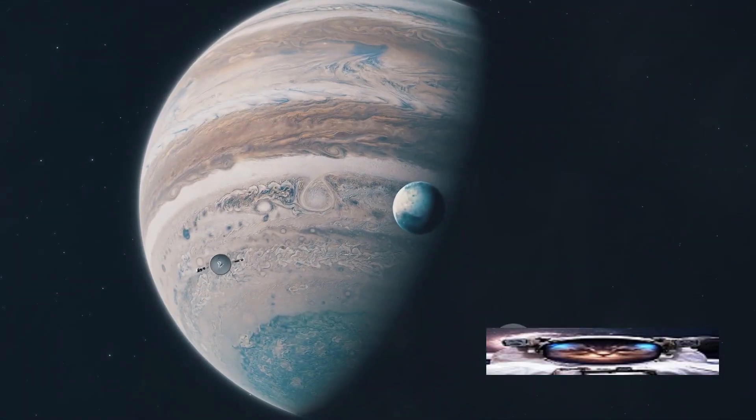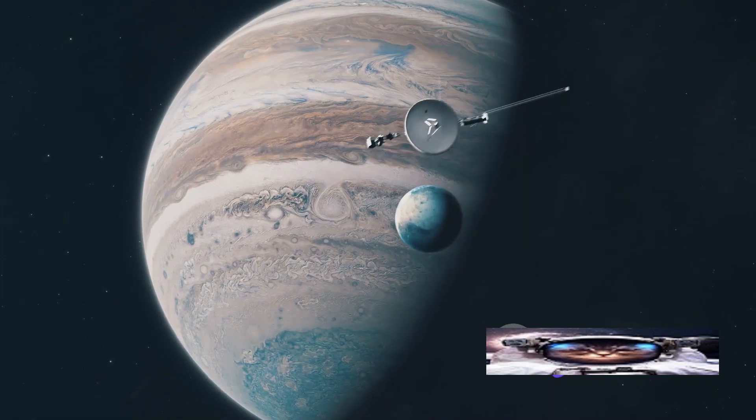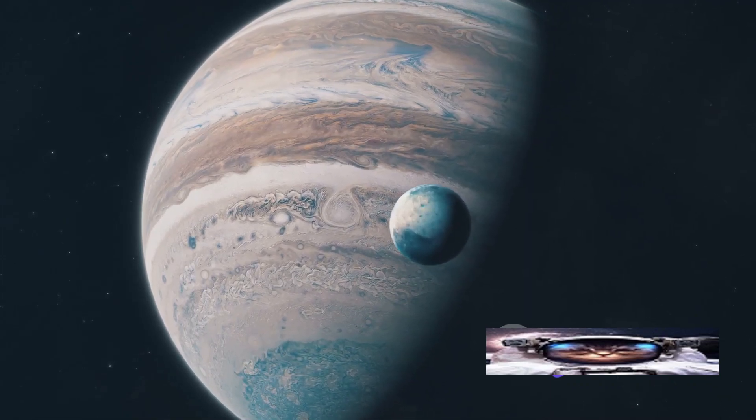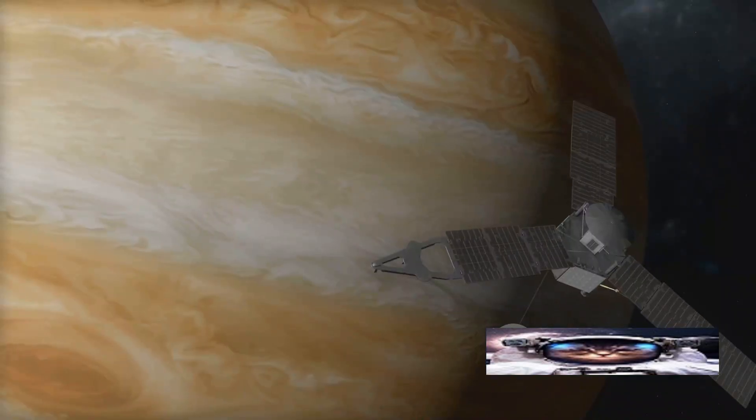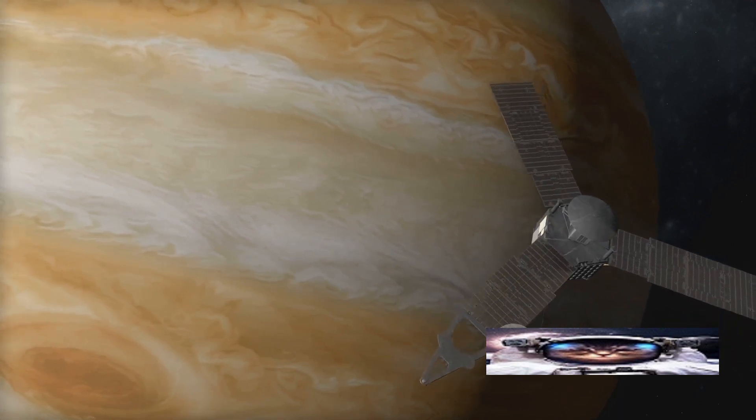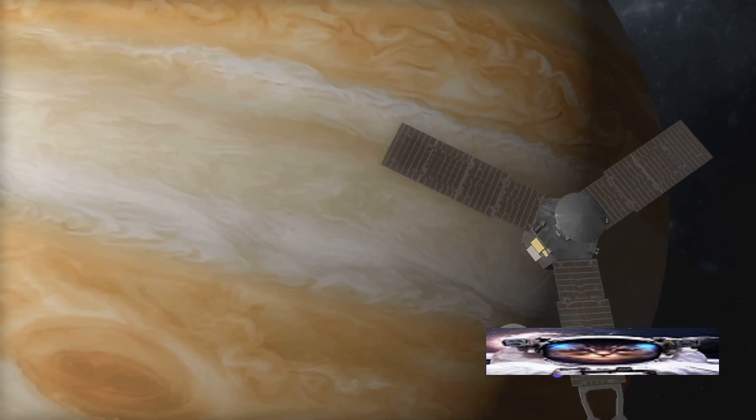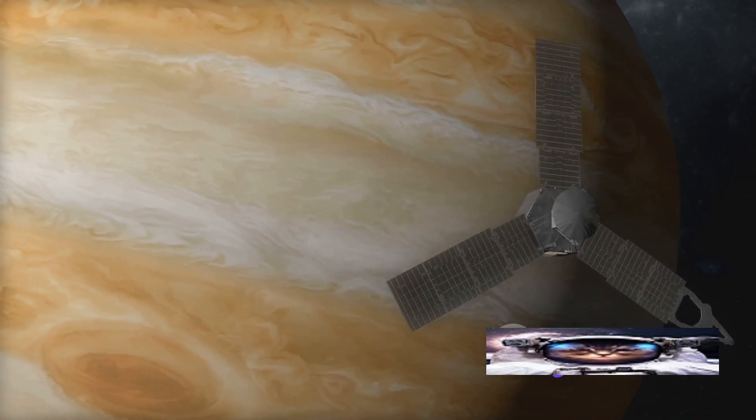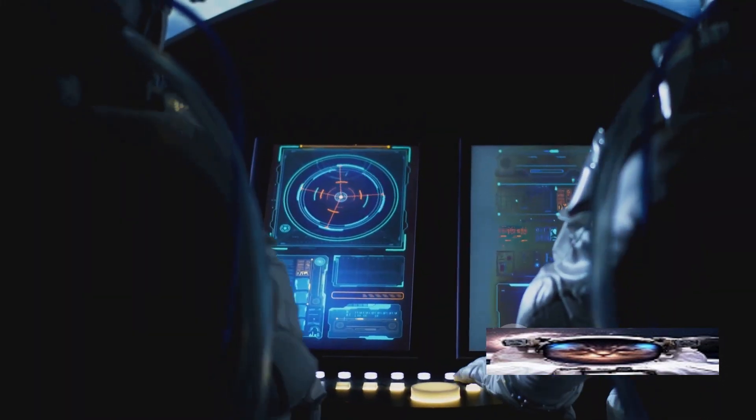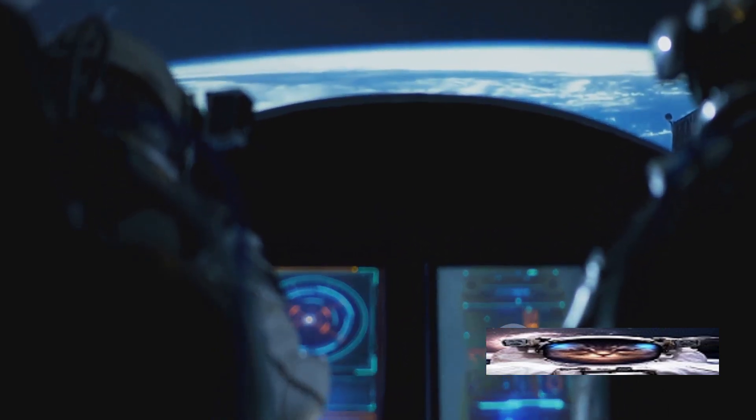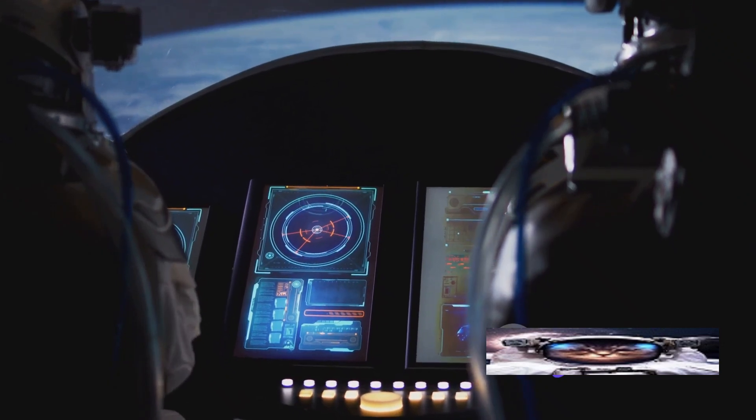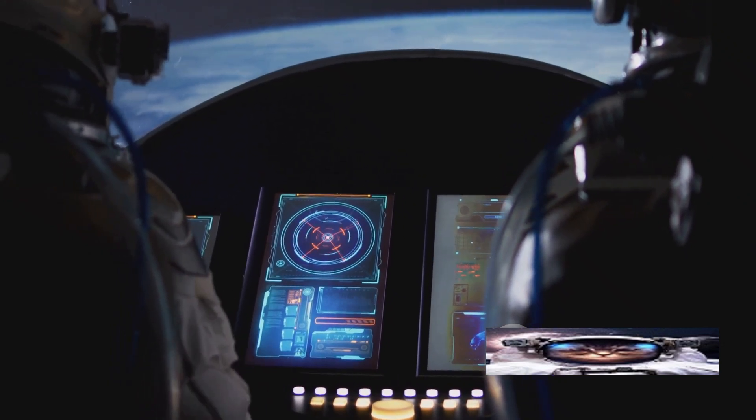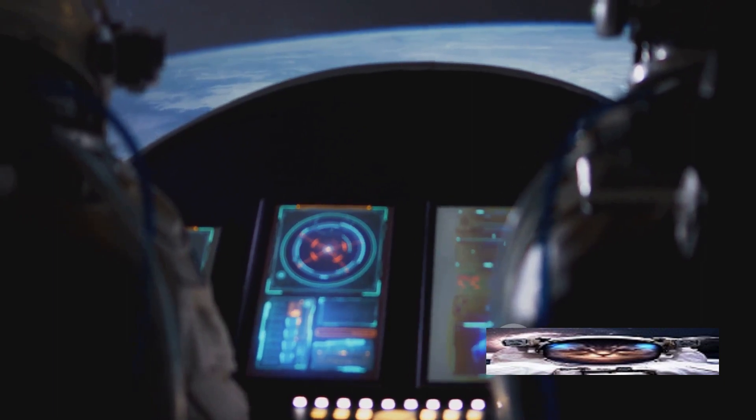But Sputnik was just the beginning. As the decades rolled on, our reach extended further into the cosmos. The late 1970s saw the launch of the Voyager missions, two spacecraft designed to explore the outer planets and beyond. These missions were humanity's first grand tour of the solar system, capturing stunning images of Jupiter, Saturn, Uranus, and Neptune. Yet Voyager was more than just a sightseeing tour. Aboard each spacecraft was a golden record, a time capsule of sorts, filled with sounds and images selected to portray the diversity of life and culture on Earth. These golden records were our first messages to any extraterrestrial life that might stumble upon them.